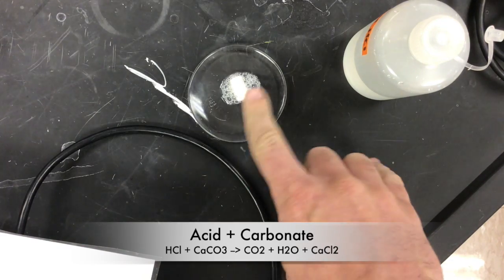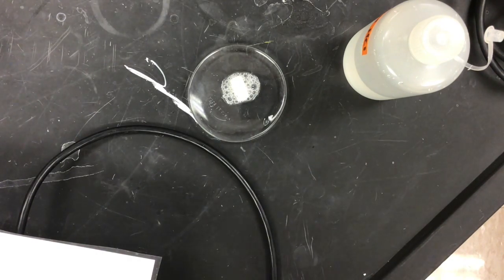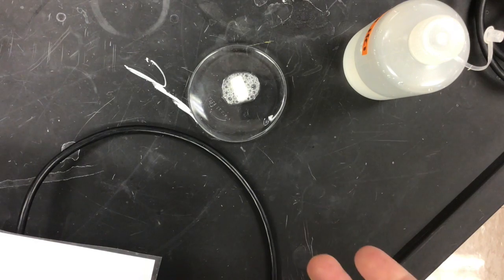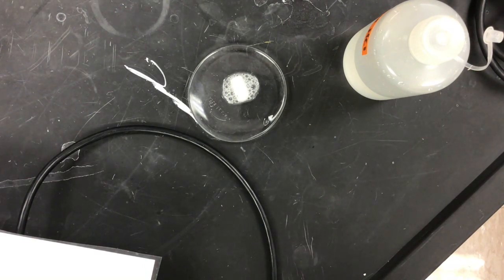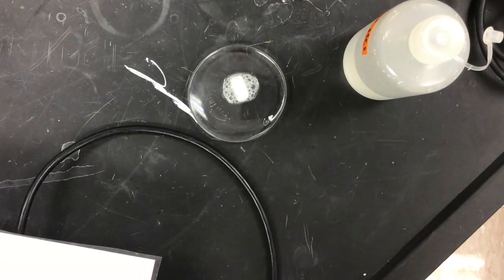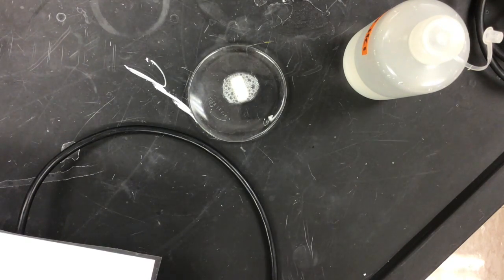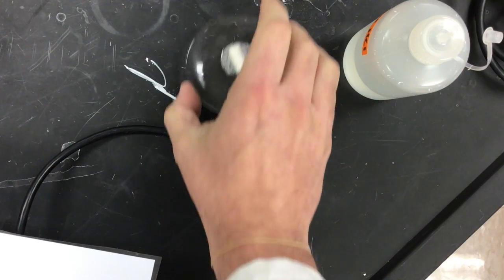And we get then a salt left over along with a little bit of water that is produced. And so our second reaction archetype, acid plus a carbonate. You're probably familiar with this one. This is the quintessential science fair volcano demonstration, in which case we use acetic acid or vinegar with our sodium bicarbonate, that would be your baking soda.